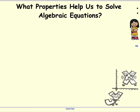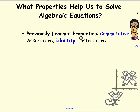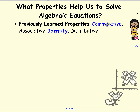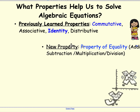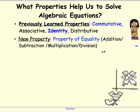So what properties help us to solve algebraic equations? A lot of the properties that help us are ones that you already know. The commutative property — shown here in blue because we'll be using it a lot. The associative property, sometimes we'll use it. The identity property, definitely we'll be using a lot. And the distributive property, again, sometimes we'll need it. Some new properties we're going to be using are properties of equality — specifically, the addition property of equality, the subtraction property of equality, multiplication, and division property of equality.